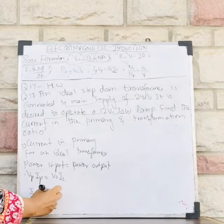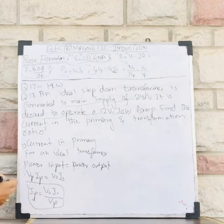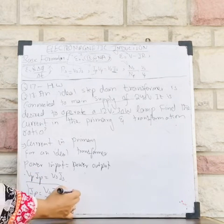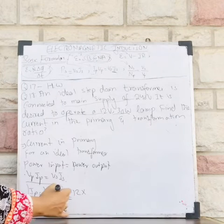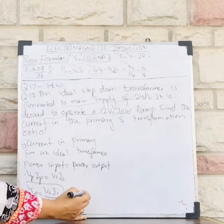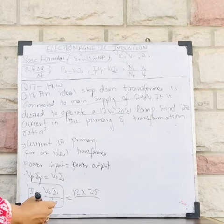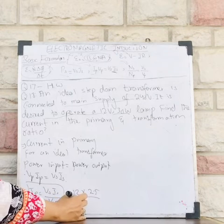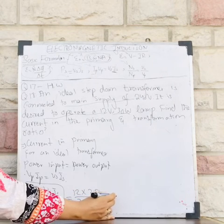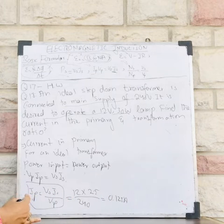Now the equation is ready. Putting in values: Ip = 12 multiplied by Is — which is the secondary current 2.5 amperes — divided by Vp which is 240. After calculation, I get 0.125 amperes. That is the current in the primary transformer.